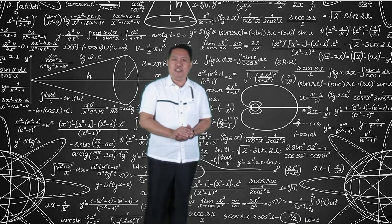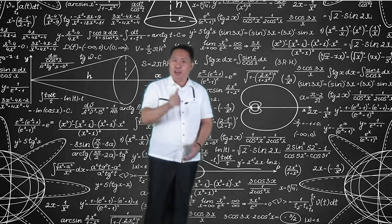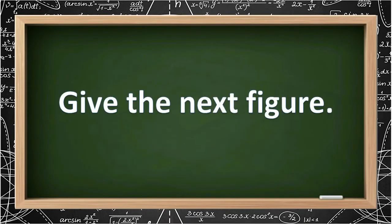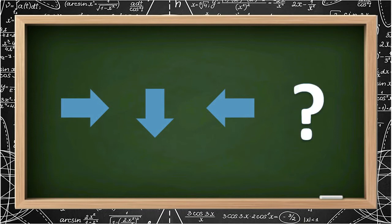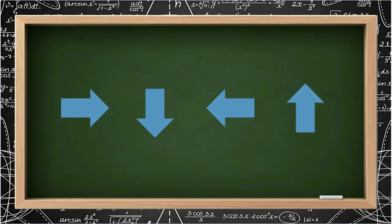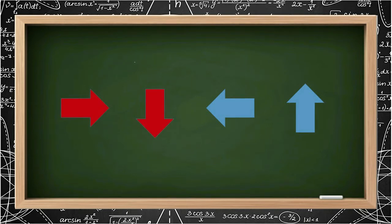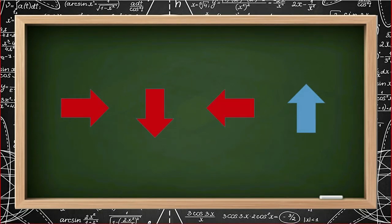How many correct answers did you get? Good job! For our next activity, you have to give the next figure in the following sequence. What do you think is the next figure? That's right! The arrows are moving clockwise, pointing to east, south, west and north.